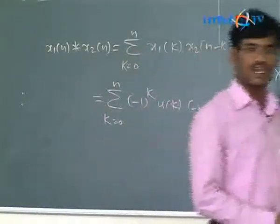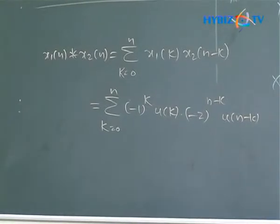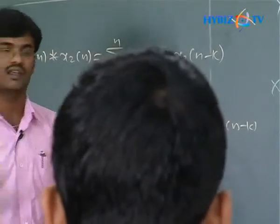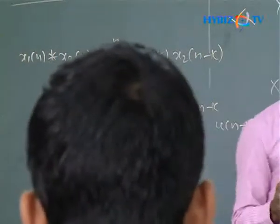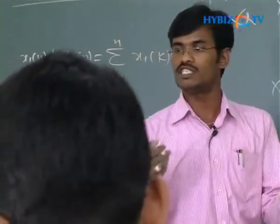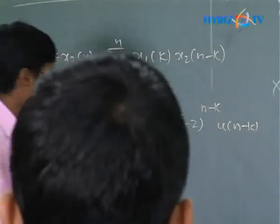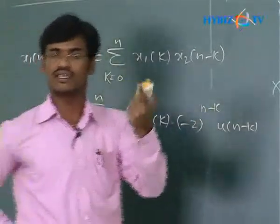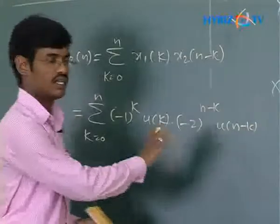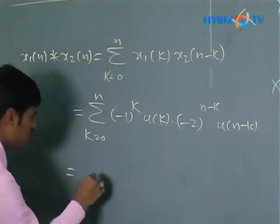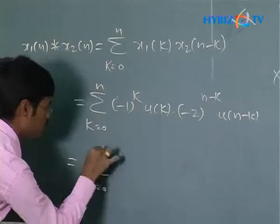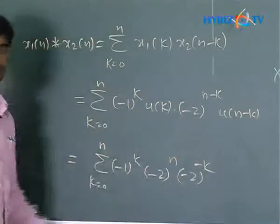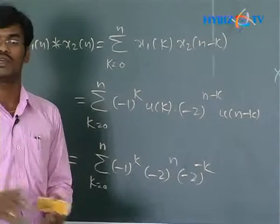The unit step function conditions are: u(n) = 1 when n ≥ 0, otherwise 0. Similarly, u(n−k) = 1 when n ≥ k, otherwise 0. Since our summation runs from k=0 to n, both u(k) and u(n−k) equal 1 within those limits, so we can write them as 1 in the expression.